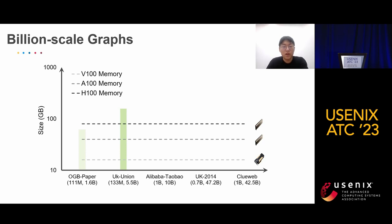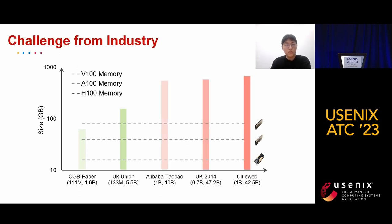Training GNNs on large-scale graphs can be very challenging. For example, OGB Paper and UK Union are two commonly seen billion-scale graph datasets. These two datasets almost reach the limit of current GPU capacities. However, when we look at the real industrial production environment, we can see that graph sizes can reach hundreds of gigabytes, orders of magnitude larger than GPU capacities, so the billion-scale graphs can be a great challenge to the industry.